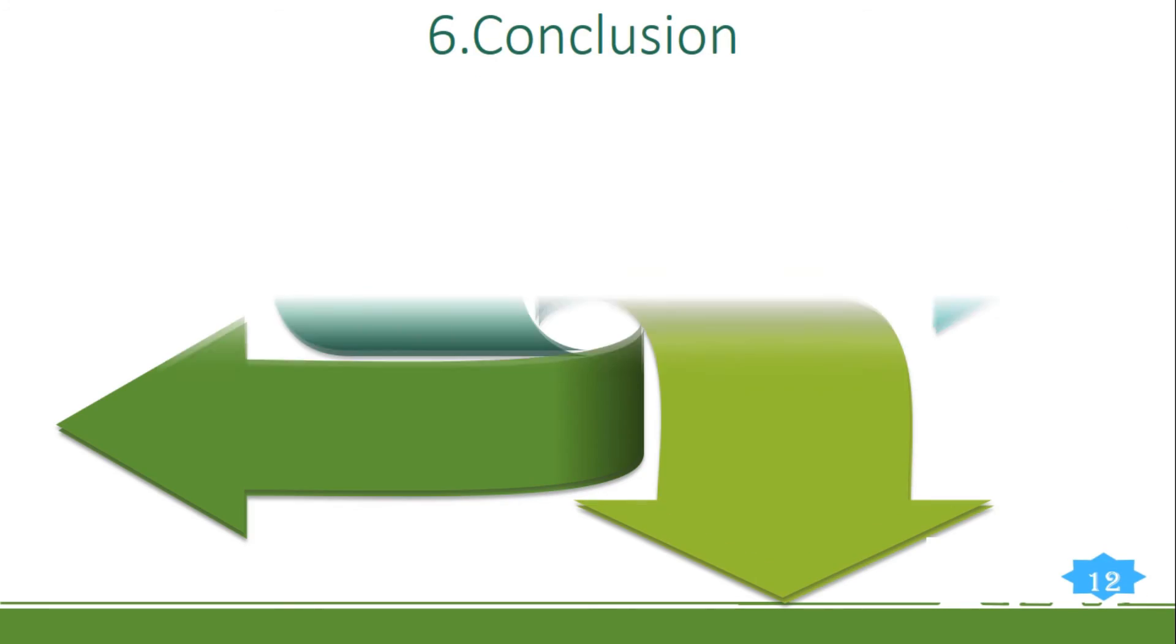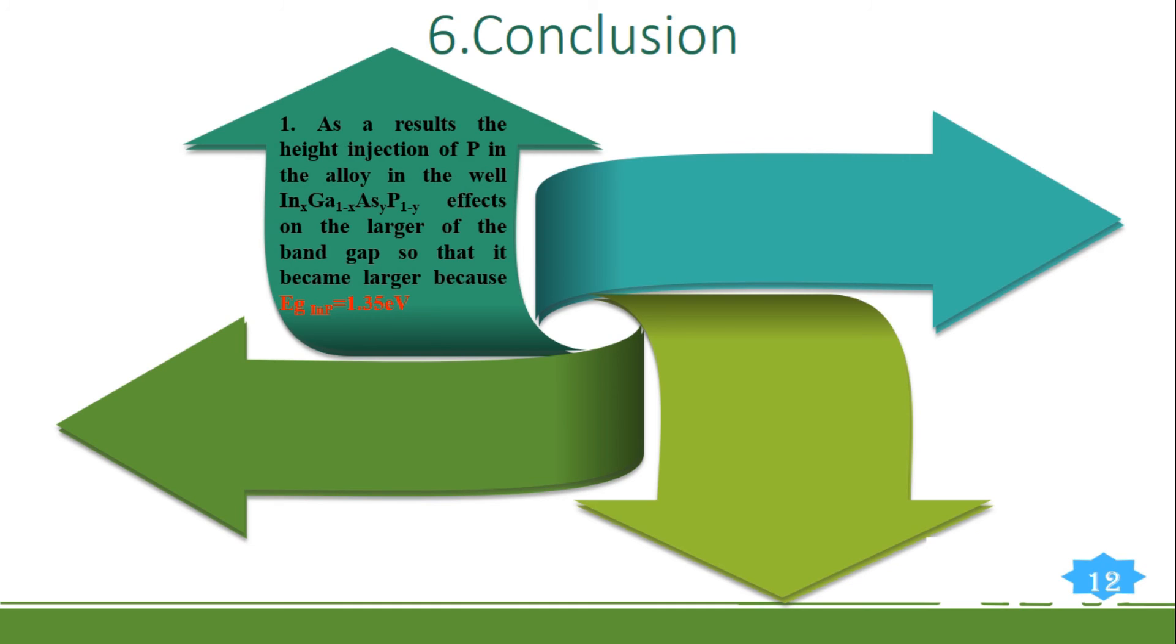As a conclusion, we notice that highest injection of P in the alloy in the well of InGaAsP affects the bandgap so that it became larger because Eg of InP equals 1.35 eV. For less than 0.92, the injection of P is more than 0.8. The energy of transition becomes bigger than 0.9 eV, which corresponds to wavelength less than 1.55 micrometers.